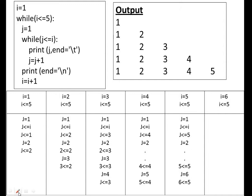Here is the working example: i equal to one, while i less than or equal to five — this is the outer loop. Next, j equal to one, while j less than or equal to i, print j with end slash t (tab space), then j equal to j plus one — this is the inner loop. The blue color lines from j to j plus one form our inner loop, and i, the while condition, and print i are the outer loop.